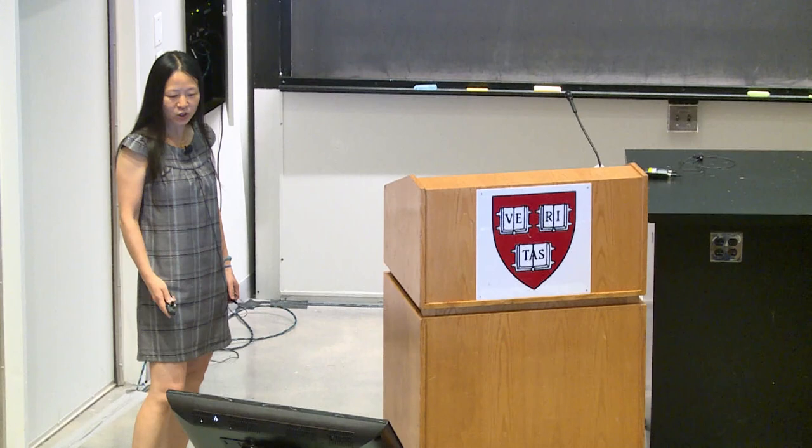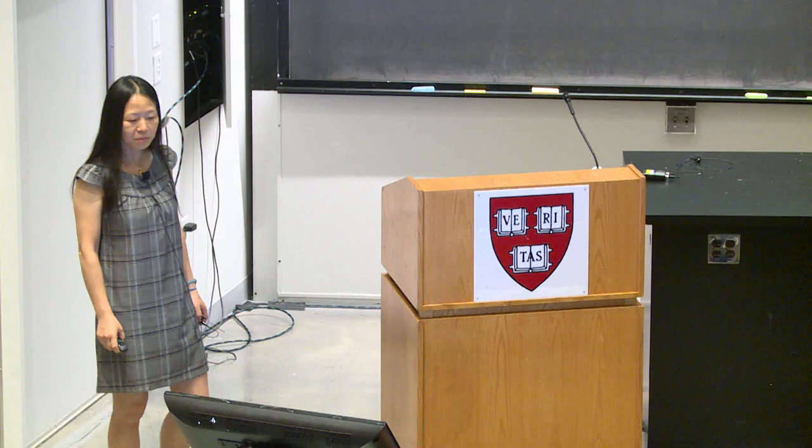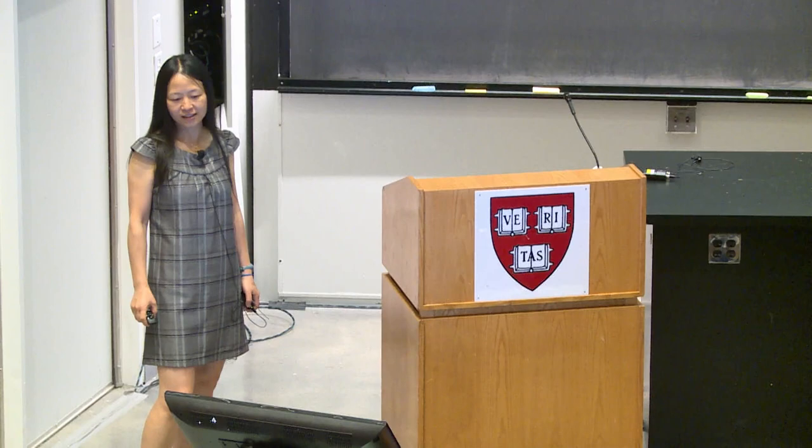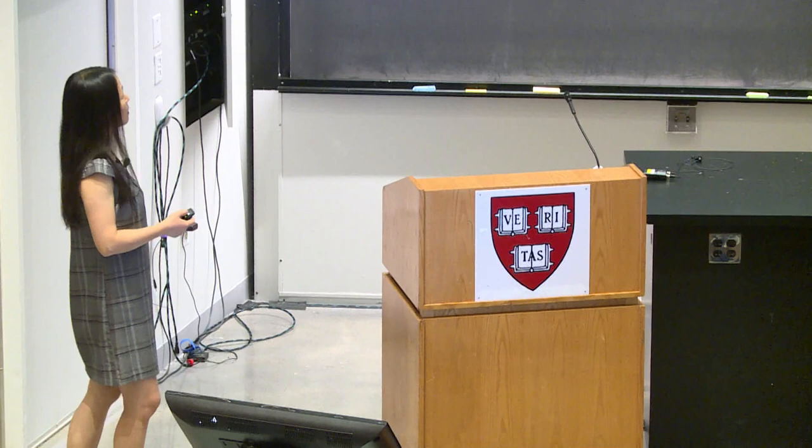To get started, one motivation is that if you look at our genomes — human and mouse genomes — a very small portion of the genome codes for the exons of proteins, and the vast majority of the genome is not coding, indicated by this gray area.